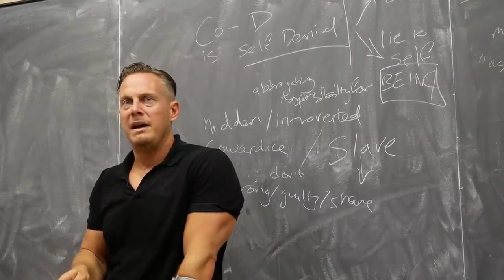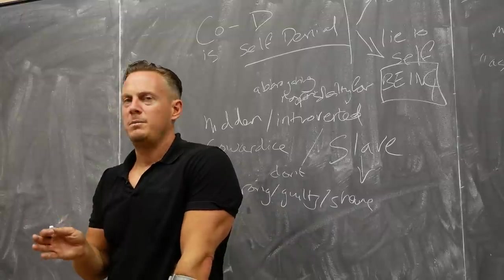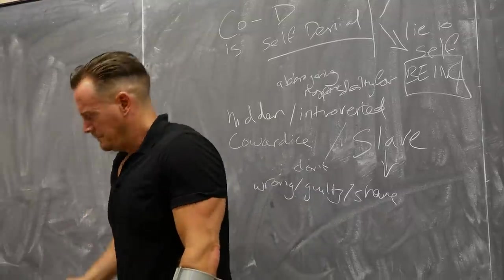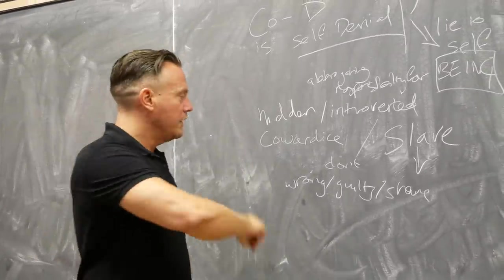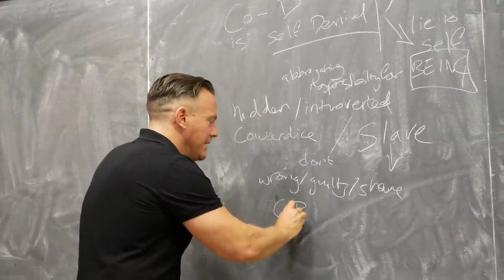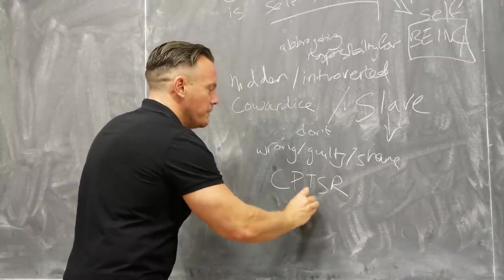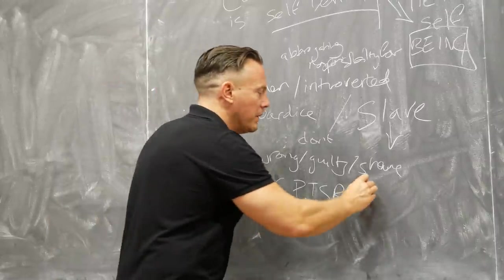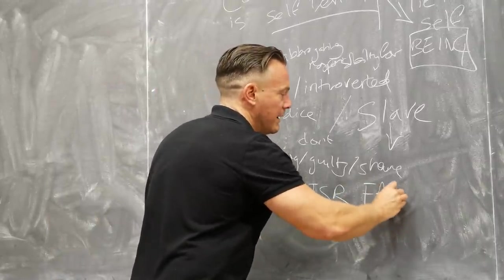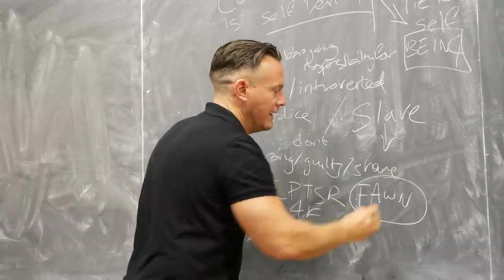In other words, we're a fuck of a lot dumber in love than anywhere else in life. You'd be a very intelligent human being, and then in the area of love, just be not so right. All of this is the CPTSD 4Fs. It's fight, it's freeze, it's fawn, but it's predominantly what we're talking about with this codependency is a neurotic fawning response.